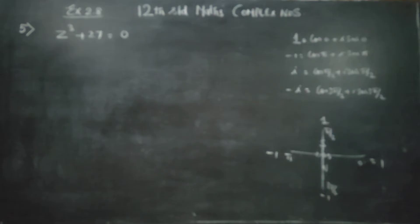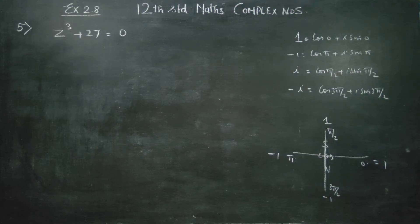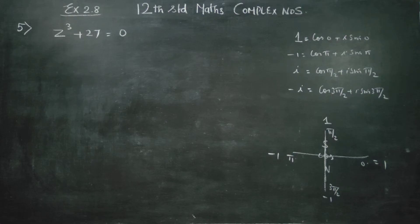With this information, we will enter into the problem. Before entering the sum, note the ready-made polar forms: for 1 it is cos0 plus i sin0; for minus 1 it is cosπ plus i sinπ; for i it is cosπ/2 plus i sinπ/2; and for minus i it is cos3π/2 plus i sin3π/2.